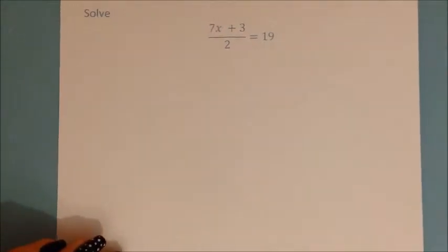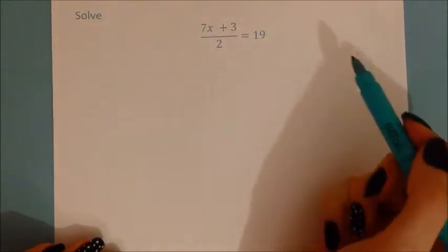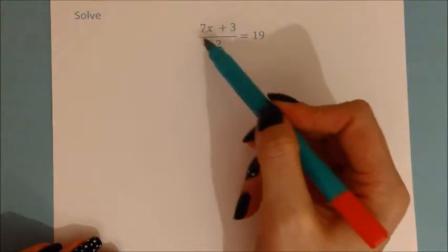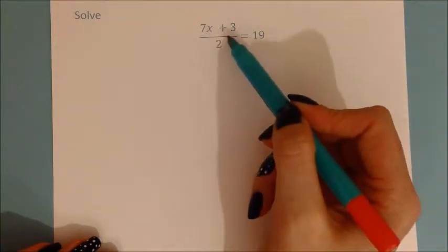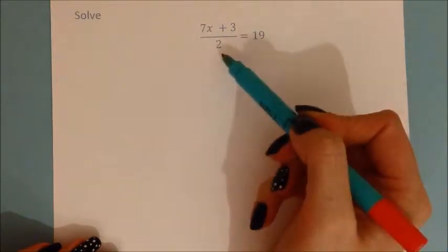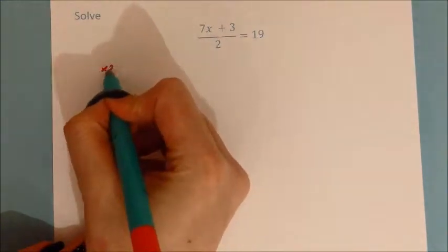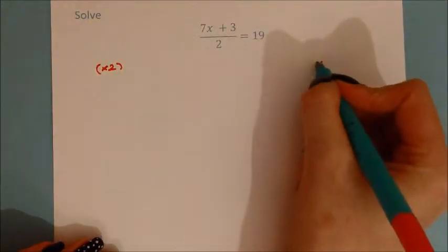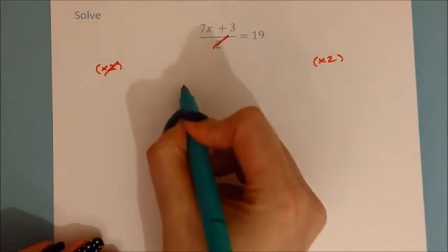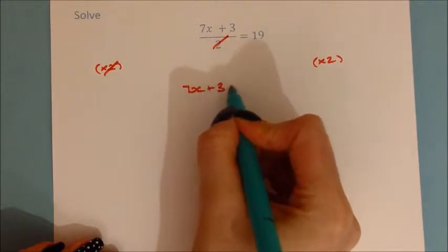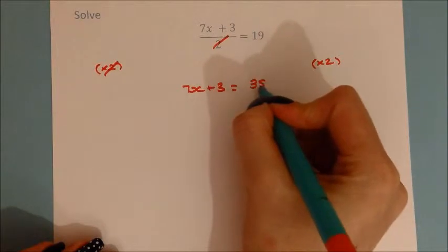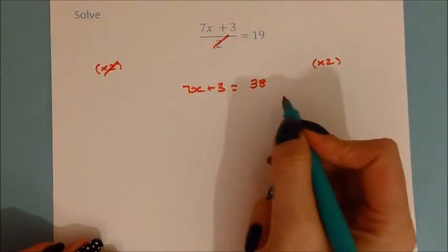Here's another equation with a fraction in it. It's important to understand the order of operations. x was multiplied by 7, then 3 was added, then that answer was divided by 2 to get 19. The last thing we did was divide by 2, so we first undo that by multiplying both sides by 2. This cancels out, leaving 7x plus 3 on one side, and 19 times 2 equals 38 on the other.